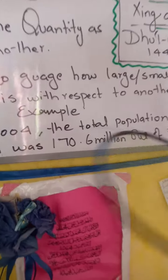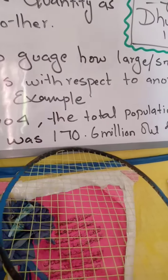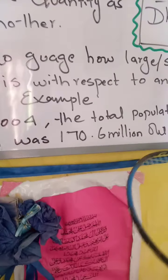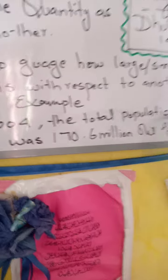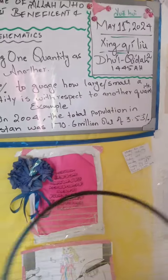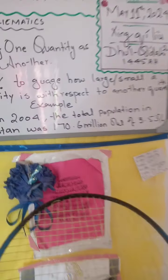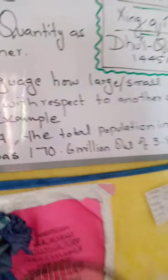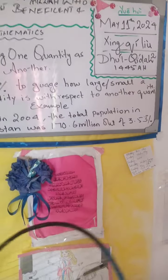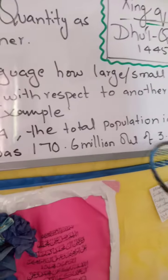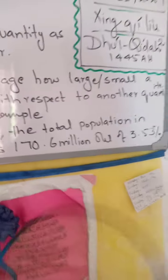So what is the percentage of true Muslims — Muslim Pakistanis — in 2004? You can definitely calculate it: if 3.53% were non-Muslim, then the remaining percentage would be Muslim.